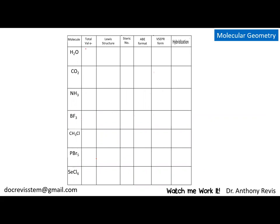Now, what we're going to look at is the total valence electrons here. We'll just do some of this chart and leave the rest to you. We might draw some Lewis structures. Steric number is going to be pretty important. Then we'll look at ABE format and VSEPR form. When we say VSEPR form, we'll be talking about whether it's tetrahedral, linear, those types of things, and hybridization.